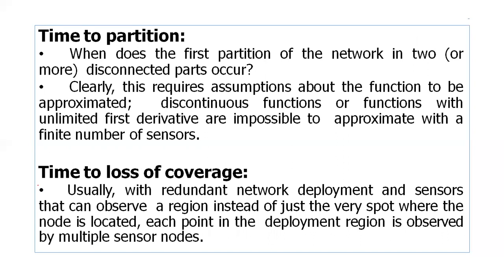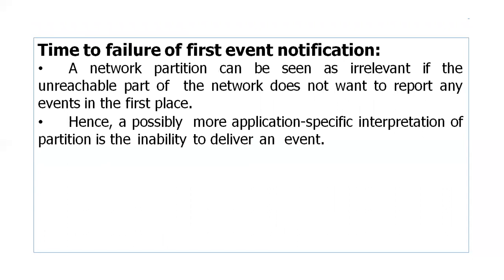Another metric is time to loss of coverage — redundant network deployment can observe events within a region, for example Bluetooth operating up to 10 meters. Without coverage the region goes unmonitored. Finally, time to failure of first event notification refers to when the first event notification to the sink node is delayed — this is also an important optimization parameter under energy efficiency.